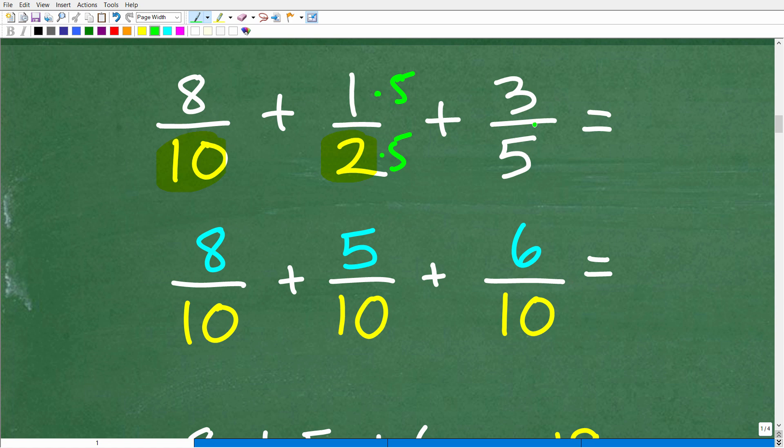Okay. So the next fraction is 3 fifths. So to change a 5 to a 10, we have to multiply the denominator by 2. So we're going to multiply the numerator by 2 as well. So we have 6 tenths. Okay. So now all of the fractions here have the same denominator, i.e., the lowest common denominator. So to add these fractions, all we have to do is simply add the numerators. Okay. So 8, 5, and 6.